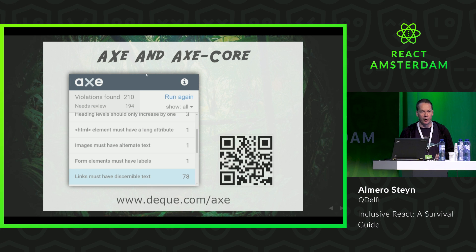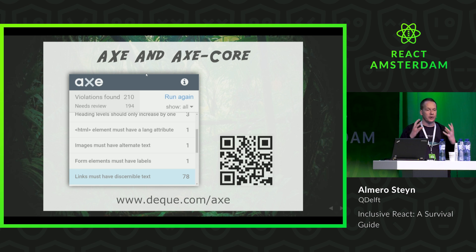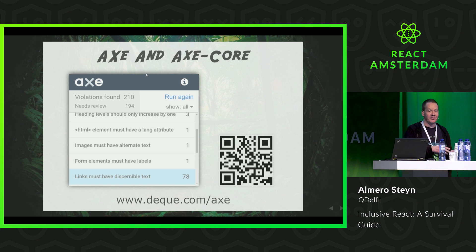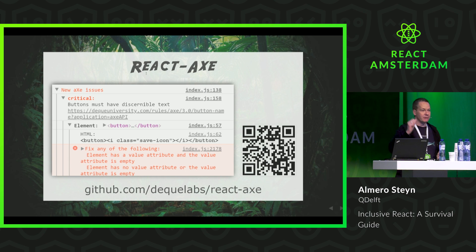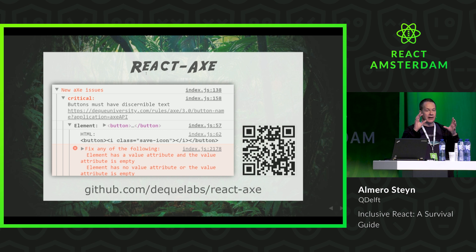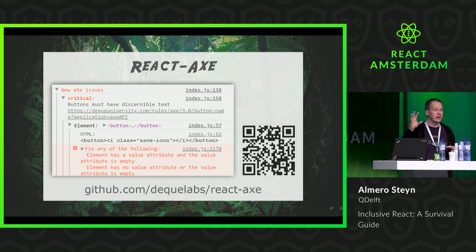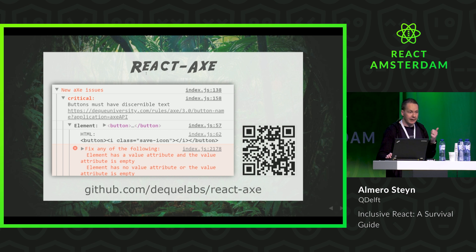Then there's axe and axe-core, the Accessibility Engine, available as a browser plugin or NPM package you can integrate in your end-to-end tests. It's an accessibility audit tool that runs scans on the rendered HTML of your application, reports any violations, tells you why it's a finding and how to fix it. There's also a React wrapper called React axe, which brings the power of axe into your React dev environment — configured so that every time your dev server reloads, it automatically runs an accessibility audit and reports findings to the console. A brilliant second line of defense with real-time information.